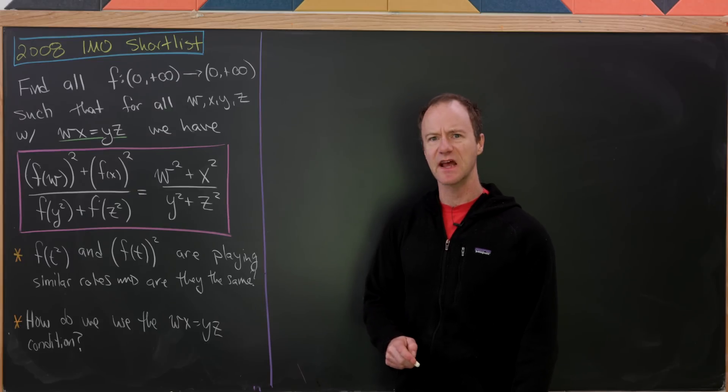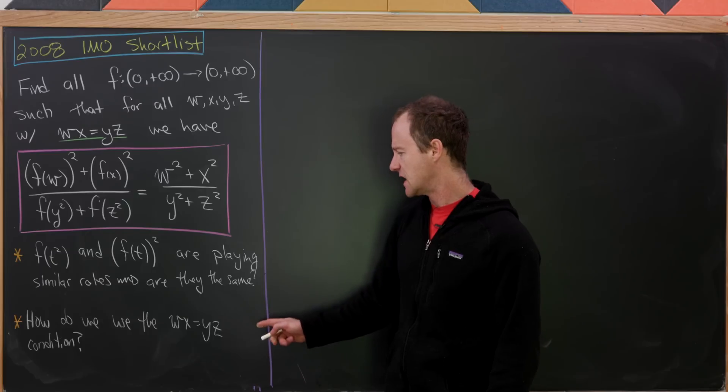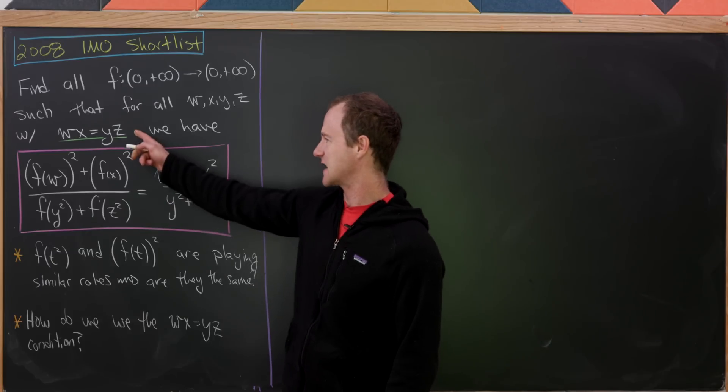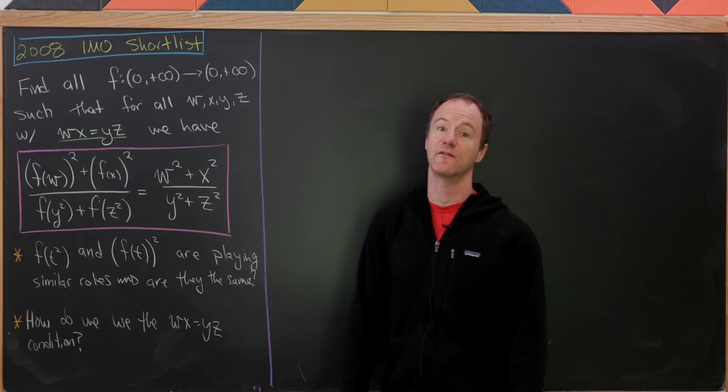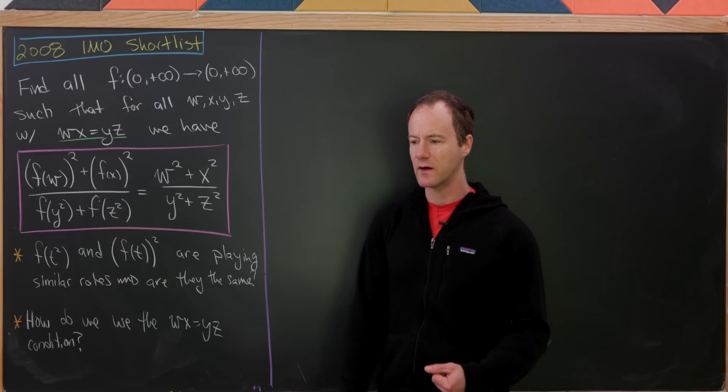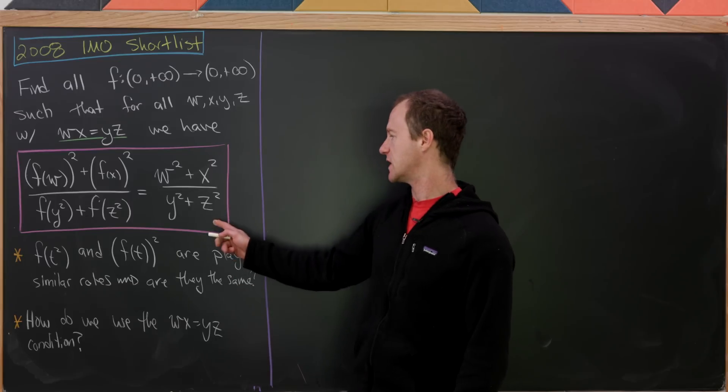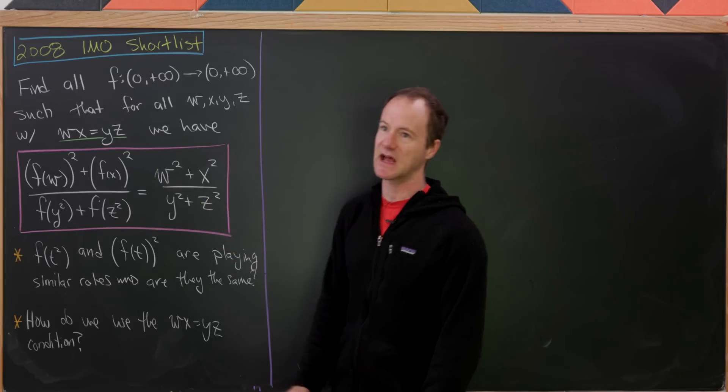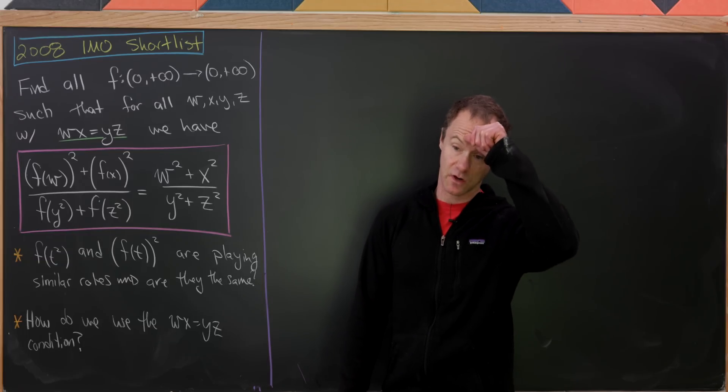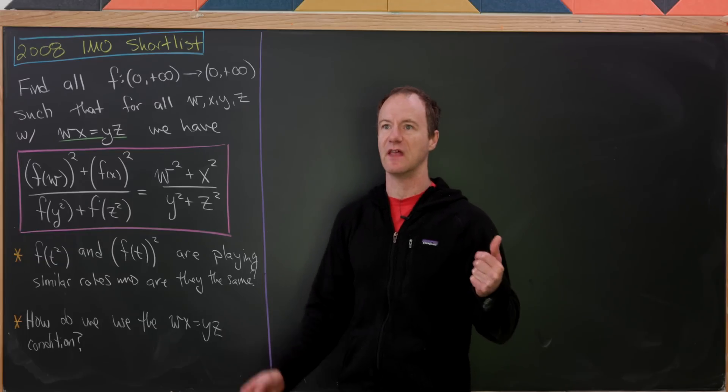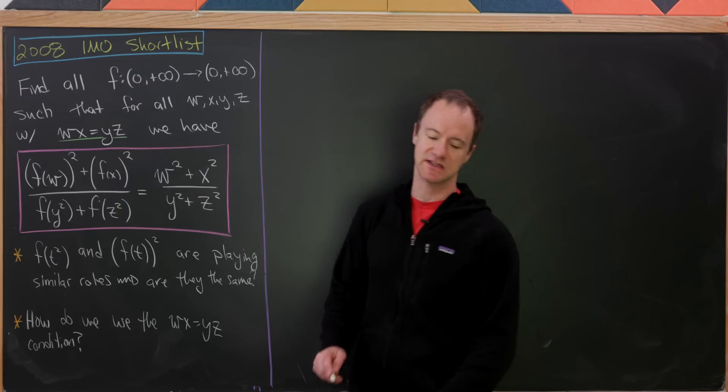The second thing that jumps out at me is how do we use this like secondary equation that wx equals yz implies this in the first place? Well, let's actually notice that we can only use this equation if we have this satisfied.